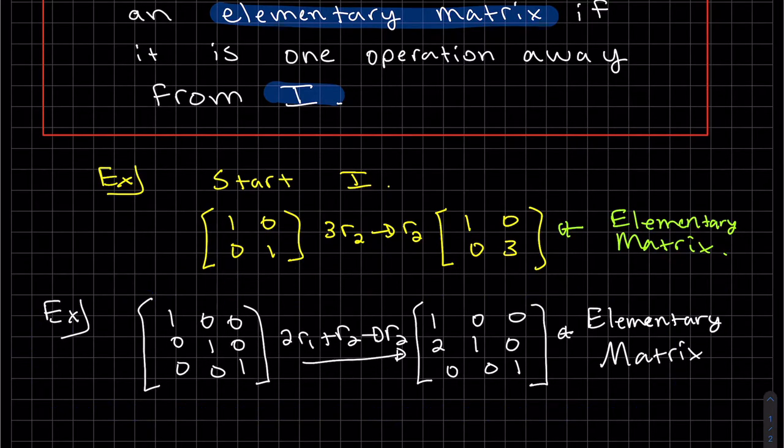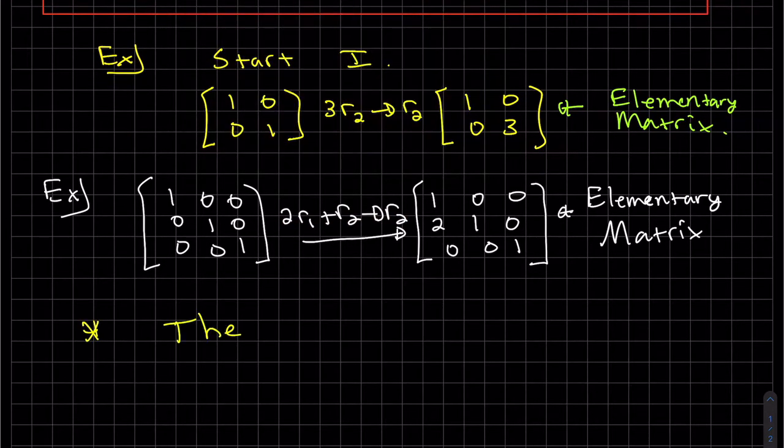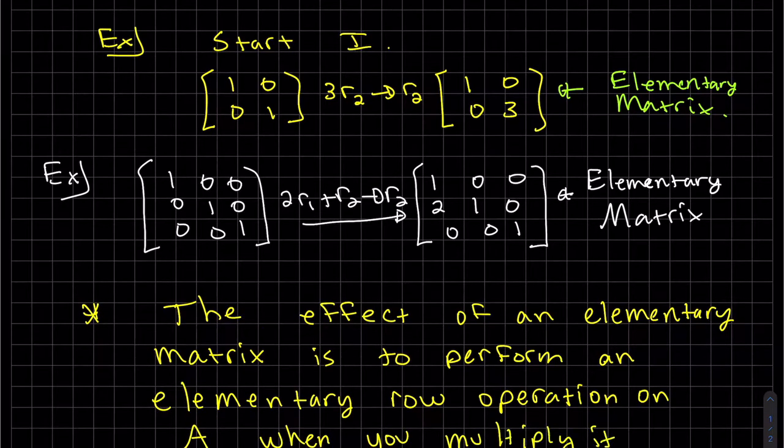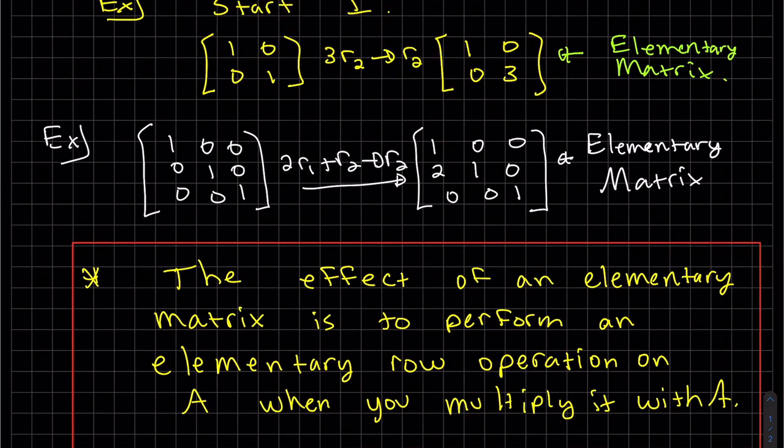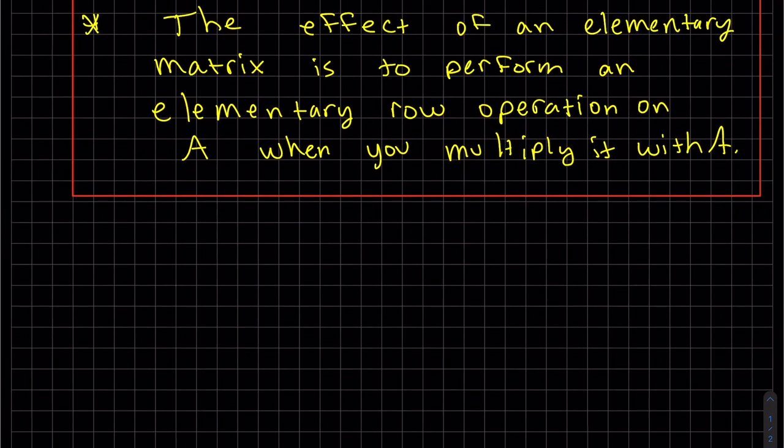This is an elementary row operation, hence elementary matrix. So the effect of an elementary matrix is to perform an elementary row operation on A when you multiply it with A. We'll show this effect after we find our elementary matrices.